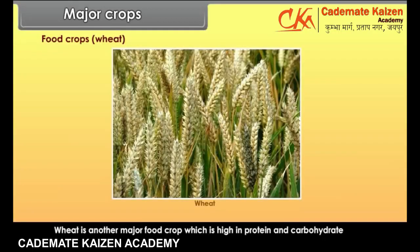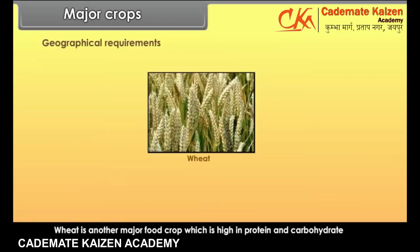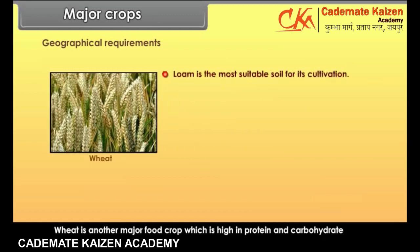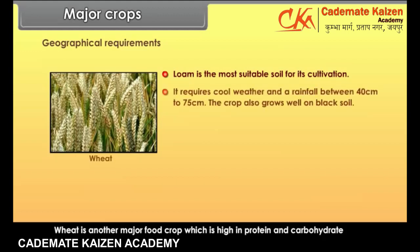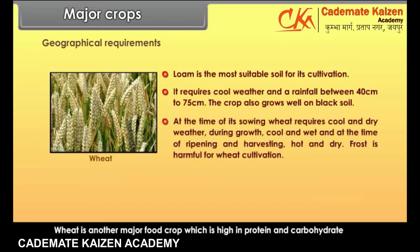Wheat is another major food crop which is high in protein and carbohydrate contents. Loam is the most suitable soil for its cultivation. It requires cool weather and a rainfall between 40 cm to 75 cm. The crop also grows well on black soil. At the time of its sowing, wheat requires cool and dry weather; during growth, cool and wet; and at the time of ripening and harvesting, hot and dry. Frost is harmful for wheat cultivation.